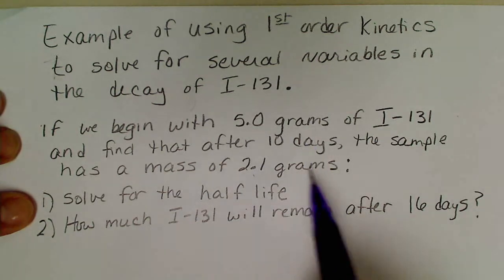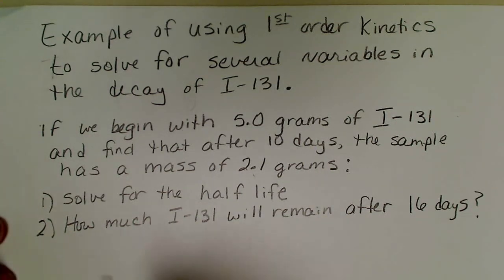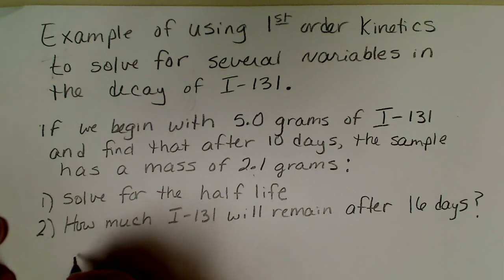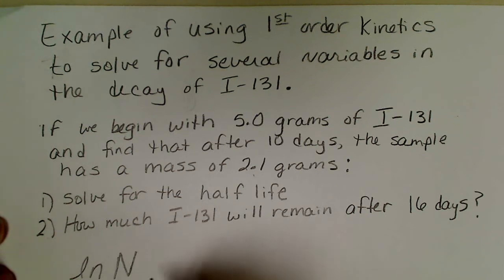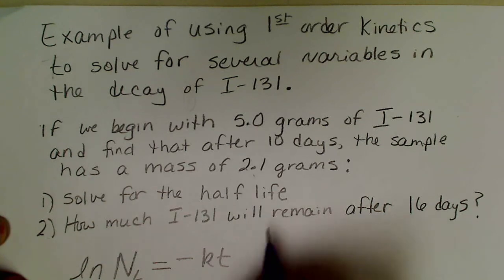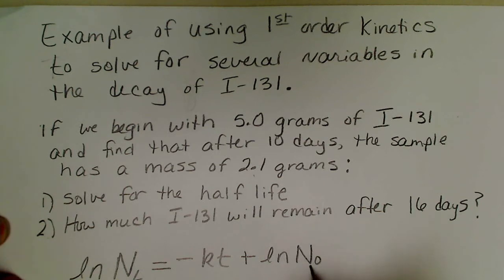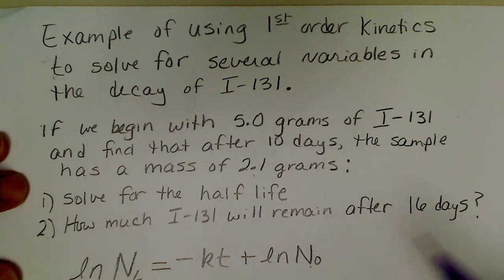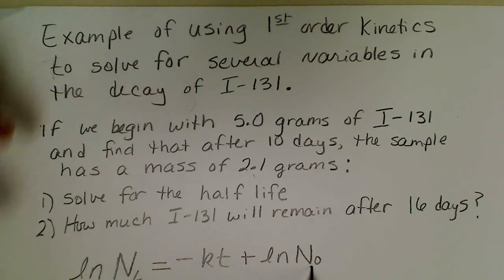I'm going to write the first-order kinetics formula. The activity or mass after time t is equal to negative kt plus the natural log of the initial activity or initial mass. If we notice from the problem we're given the initial amount 5 grams.